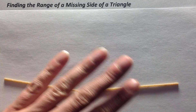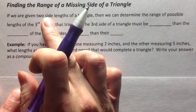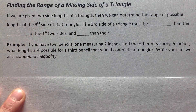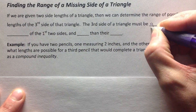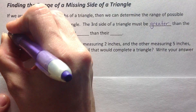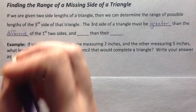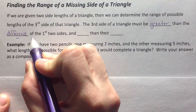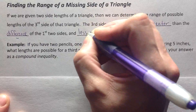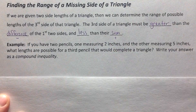So the third side has to be between one and seven. Looking at the actual theorem: if we're given two side lengths of a triangle, we can determine the range of possible lengths of the third side. Your third side must be greater than the difference — remember, difference means subtract — and less than their sum. Sum means when you add them.